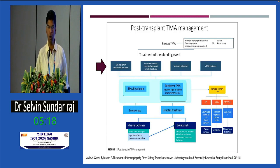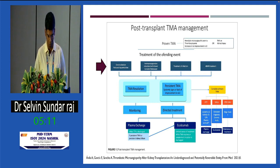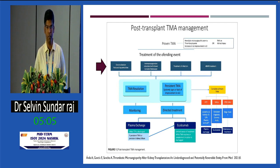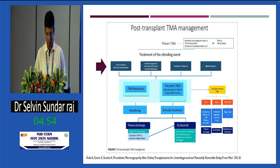How do we manage post-transplant TMA? When TMA is proven, always treat the offending agent first. Decrease ischemia times, and if CNI is the offending agent, withdraw it or decrease the dose. Treat any infections that may have triggered the TMA, and if ABMR is suspected, treat that. If there is resolution, the patient can be closely followed up. If TMA persists, directed treatment such as plasma exchange or eculizumab is required.